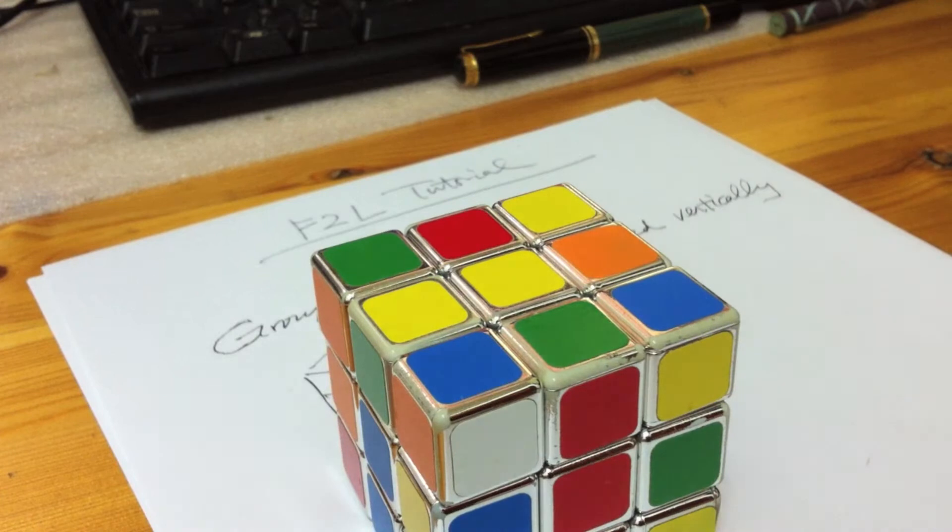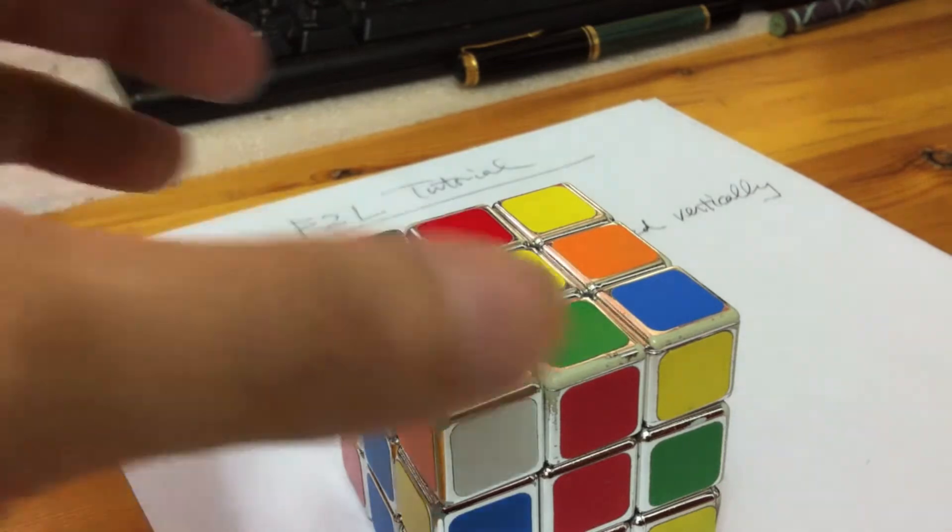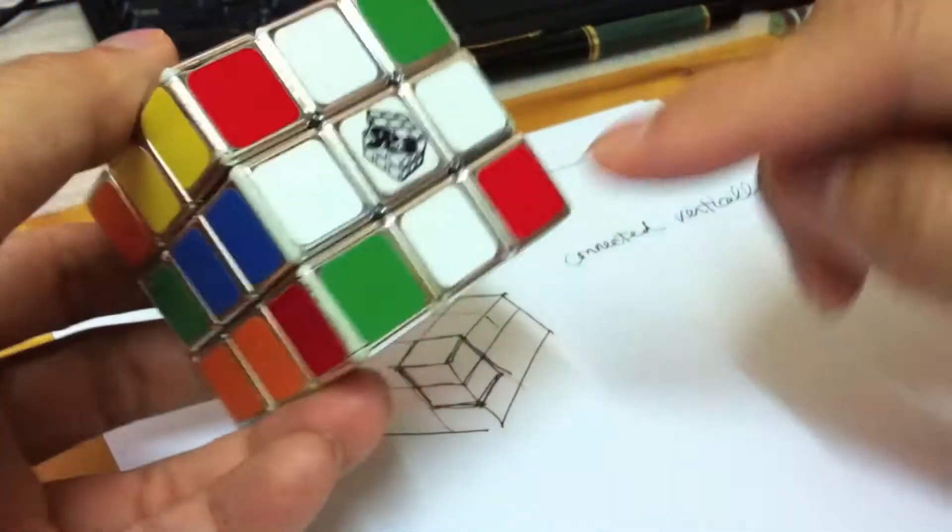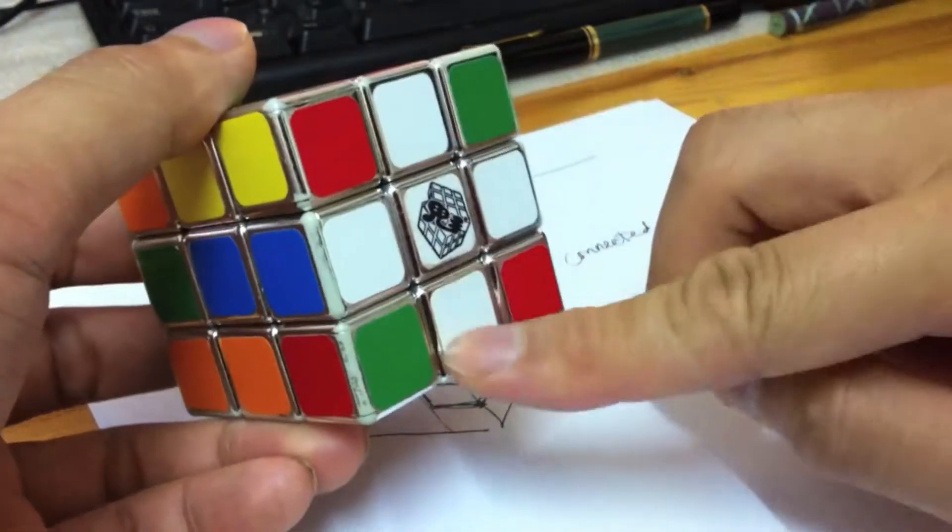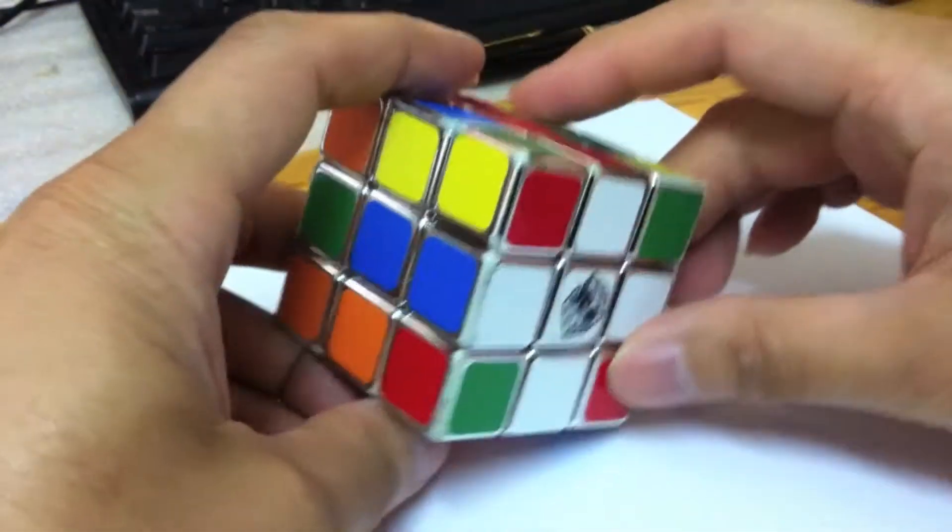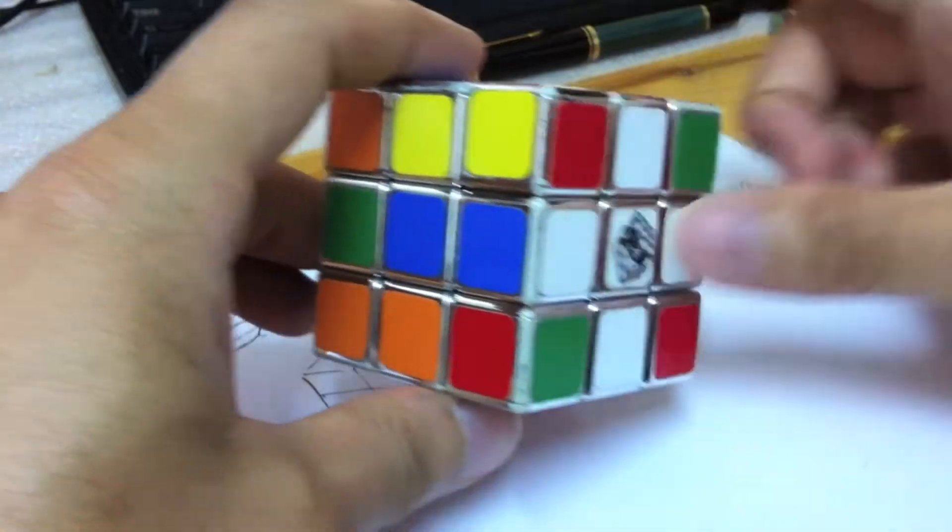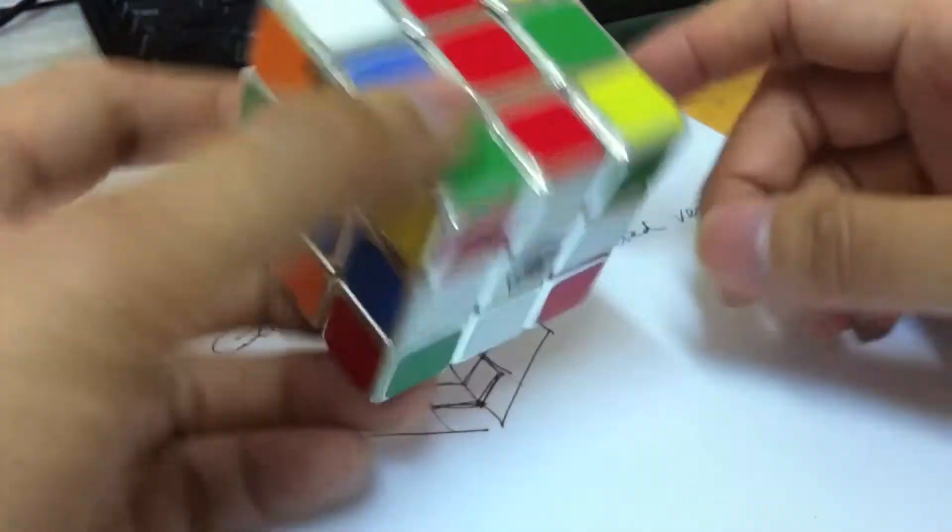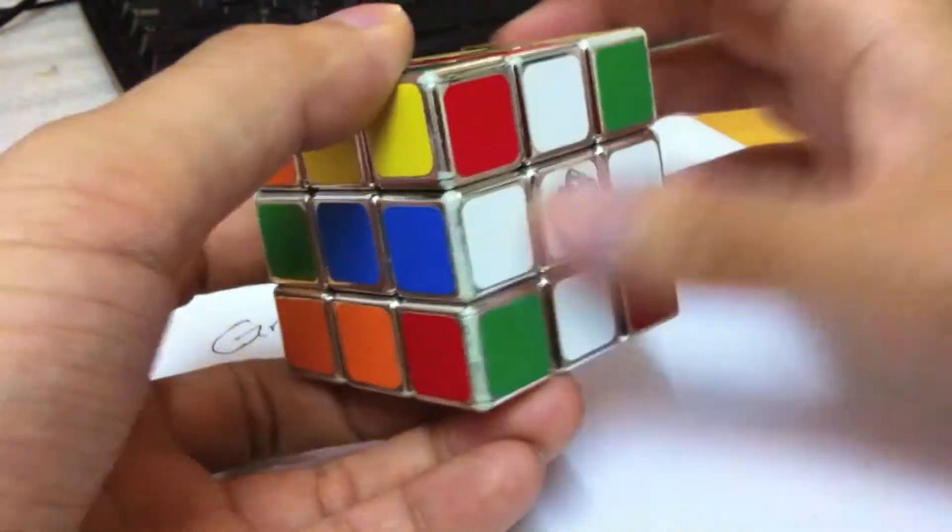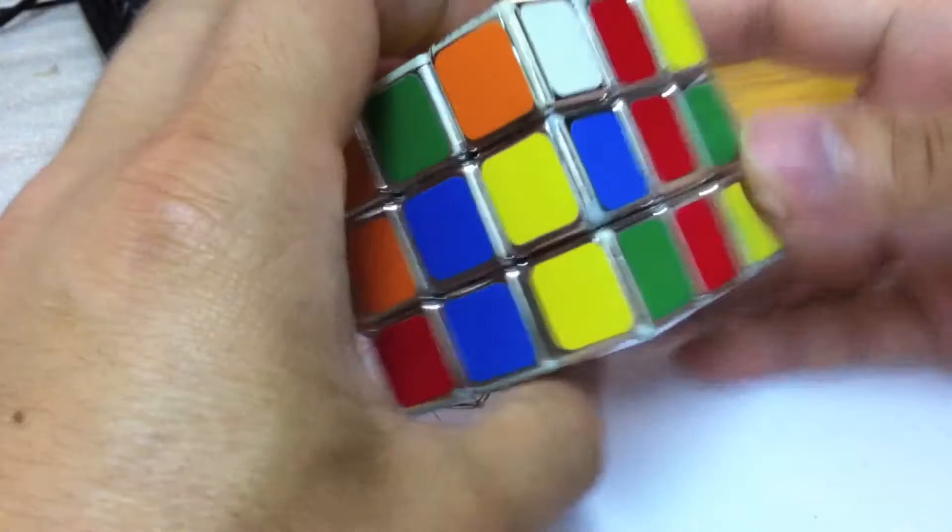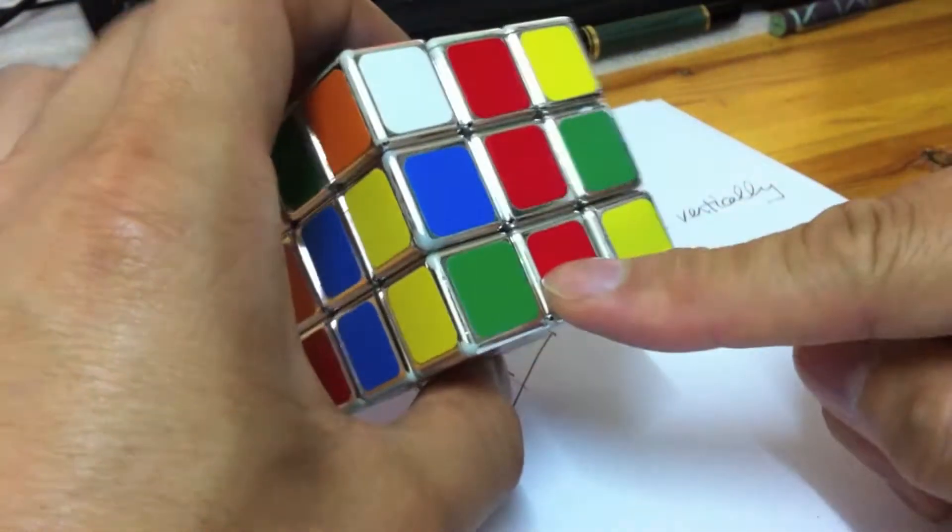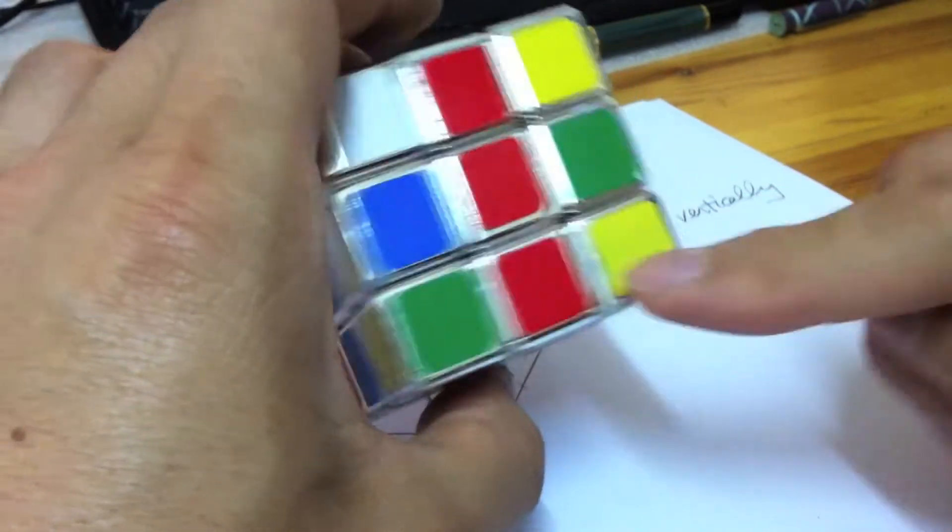The first step in using the first two-layer method is to build a cross at the bottom. The convention I'll be using is to use the white color as the bottom and here I have constructed a white cross at the bottom, flip it over, and I do not need to see this cross again. Notice that after doing the cross, the edge color must match the center pieces.